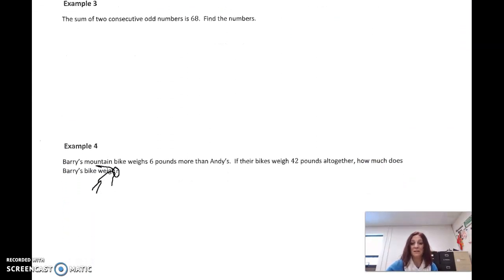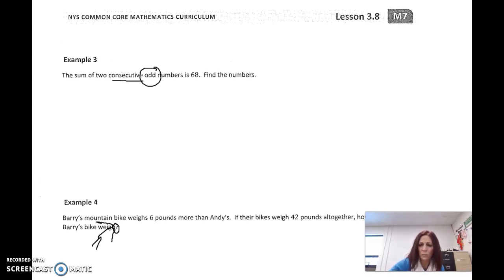Alright, I might see a stick figure right here. It says the sum of two consecutive, that means in order, odd numbers, is 68. So consecutive odd numbers. Think of our odd numbers, right? One, three, five, seven, nine, eleven, thirteen, right? Those would be consecutive odd numbers. They're odd numbers that come in order. So we need two consecutive odd numbers that add, because that's what sum means, to 68.